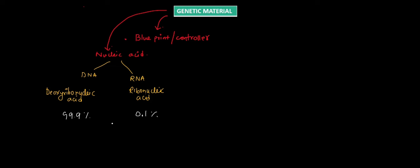If you talk about why DNA is the genetic material in almost every organism, it is all because of its stability. DNA is more stable than RNA. RNA is more reactive than DNA.